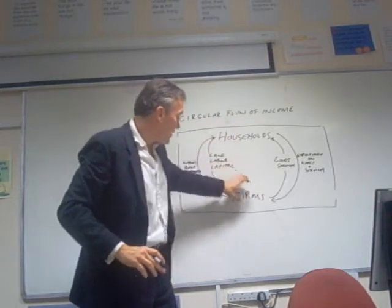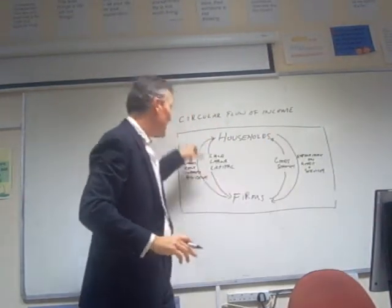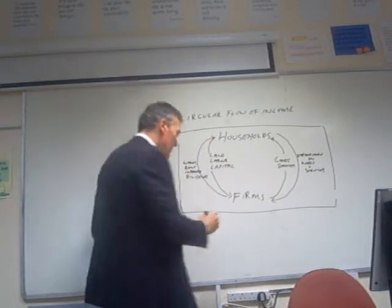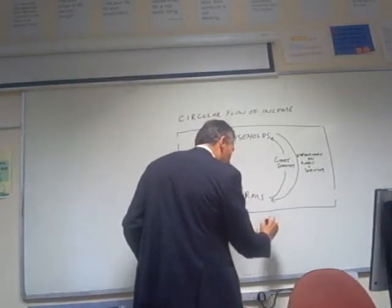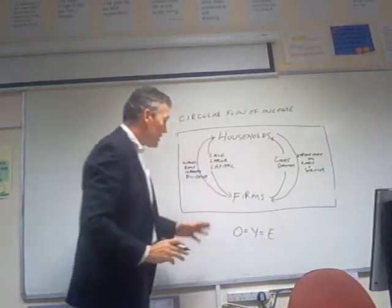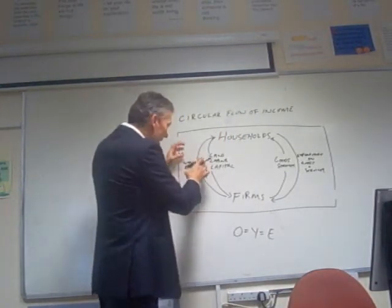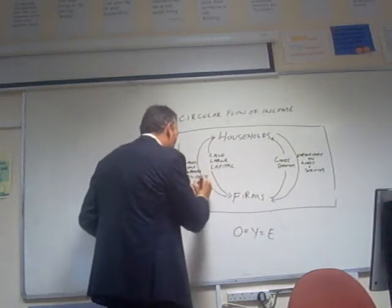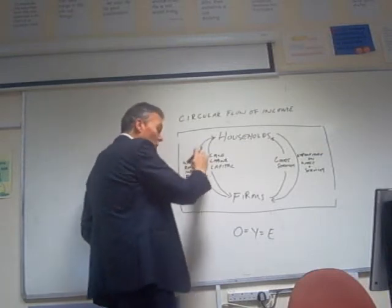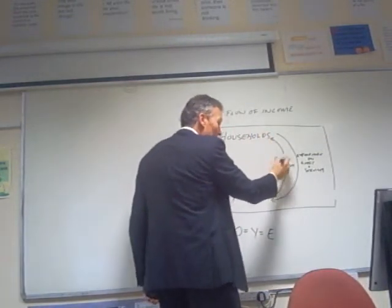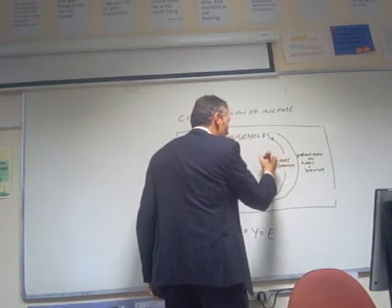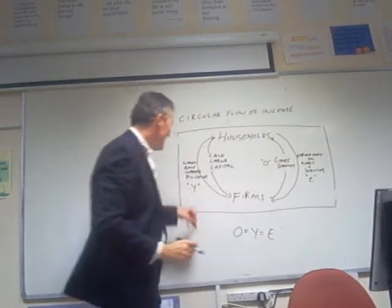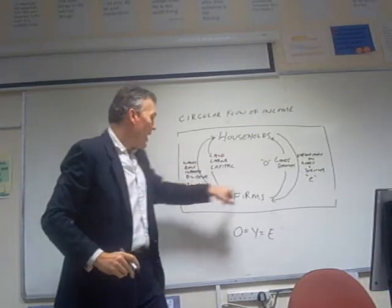The households send the basic materials to the firms, the firms make the goods and services, we buy the goods and services and they send the money back. This helps us explain the famous economic formula O equals Y equals E. If we stop the money at the wages and rent stage, that's what we call our income, or Y. When the money flows on to the production of goods and services, we call that O — the output. And when it reaches expenditure on goods and services, that equals E.